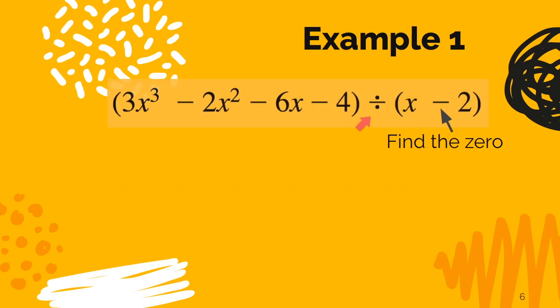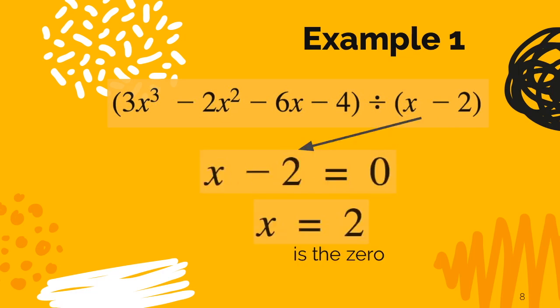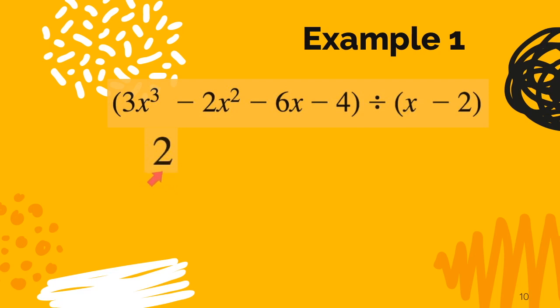So let's get right to it. First thing you do is you take your linear binomial and you find the zero on that. So you set it equal to zero and x equals 2 is the zero that we need. And just write the 2 all by itself.